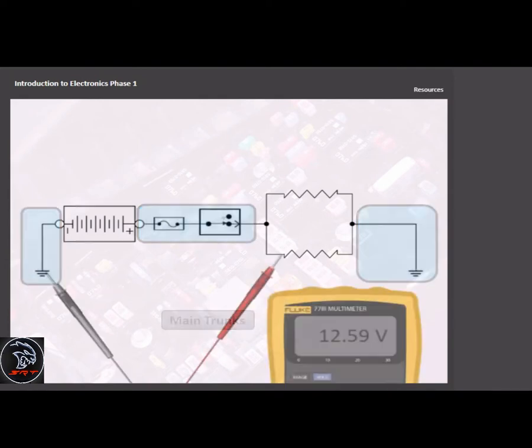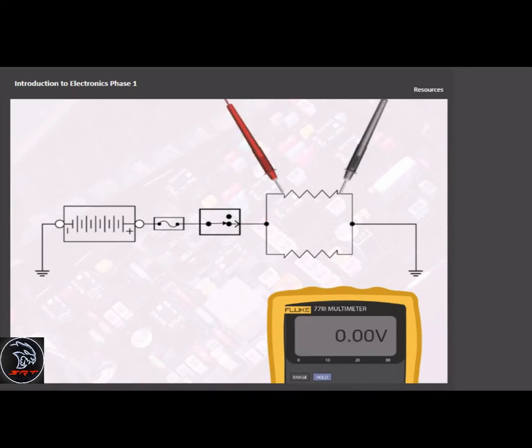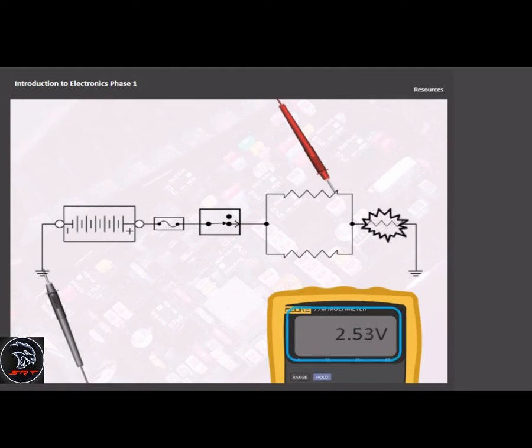Unlike series circuits, parallel circuits should have each load on the parallel branches. The voltage drop across each parallel branch should be the same. Unwanted resistance in the main trunk power or ground circuits will affect all branches.